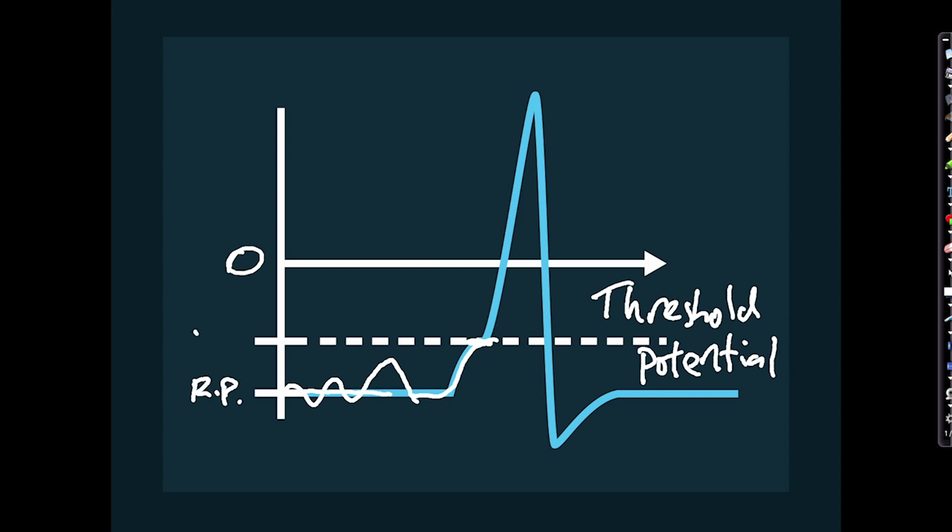So these are the two key landmarks, if you like, in the membrane potential of a neuron, the resting potential and the threshold potential. Now, just a bit of terminology. I've kind of spoken about the membrane potential going upwards and downwards. There's actually a more technical term which is more correct and which we will use.